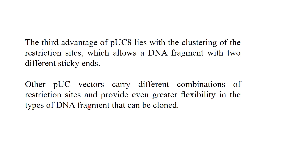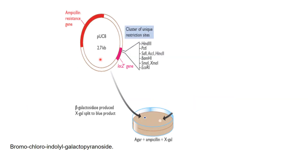The pUC series includes pUC8, pUC9, pUC18, and pUC19. The structure of pUC8 shows a size of 2.7 kb, with an ampicillin resistance gene acting as a marker. The ampicillin resistance gene has no recognition site for any restriction enzyme. The cluster of restriction sites is found within the lacZ gene, which is responsible for synthesis of the enzyme beta-galactosidase. Restriction enzyme sites present include PST1, BamHI, SmaI, and EcoRI.